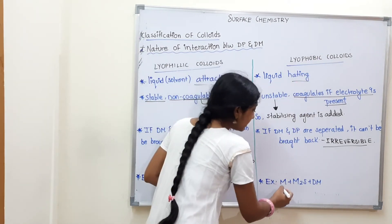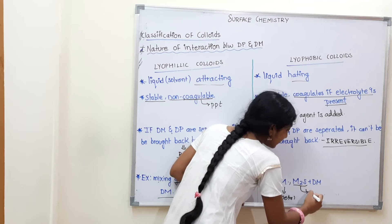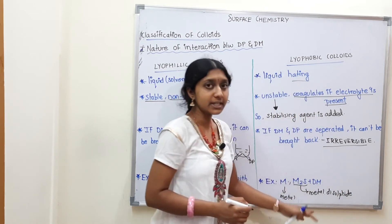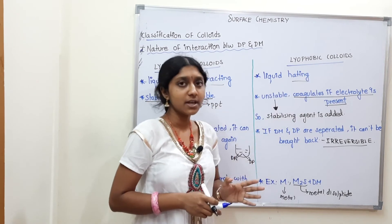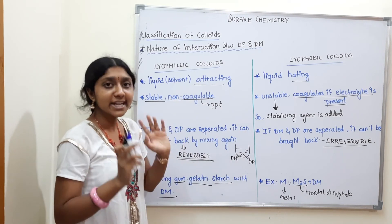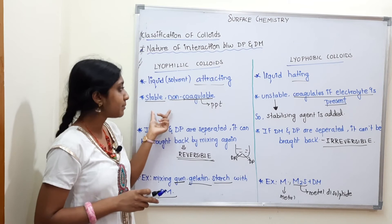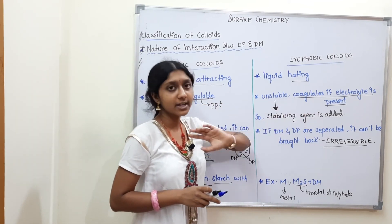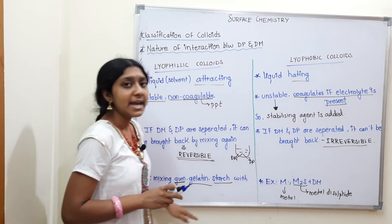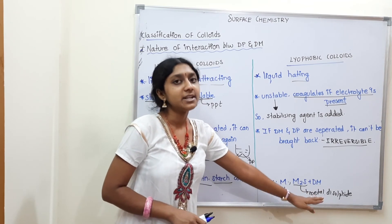Examples of lyophobic colloids: metals and metal disulfides mixed in a dispersed medium form lyophobic colloids. So to summarize: lyophilic colloids use gum, gelatin, and starch mixed in dispersed medium; lyophobic colloids use metals and metal disulfides mixed in dispersed medium.